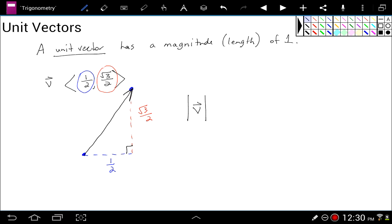So this is the distance, the length of this vector v. And it equals, by using the Pythagorean theorem, the square root of one half squared plus the square root of three over two squared, which is the square root of one fourth plus three fourths, which is the square root of one, which is one. So since this vector has a magnitude of one, this is a unit vector.